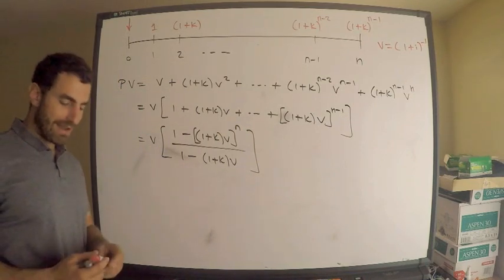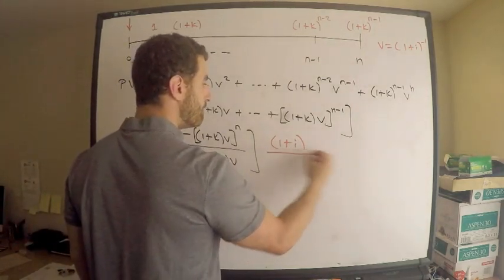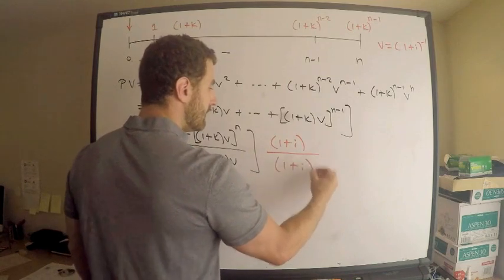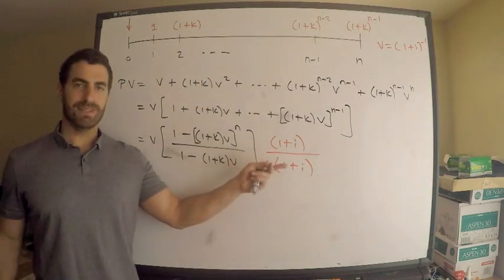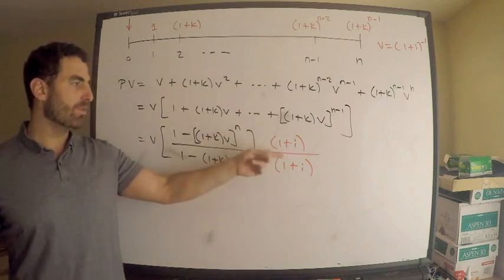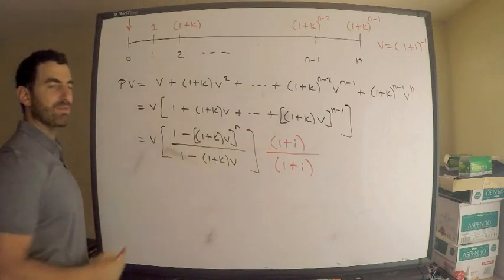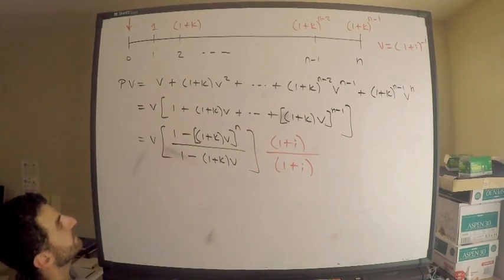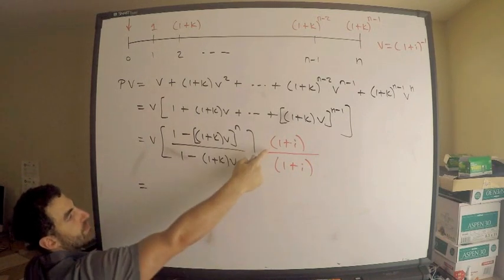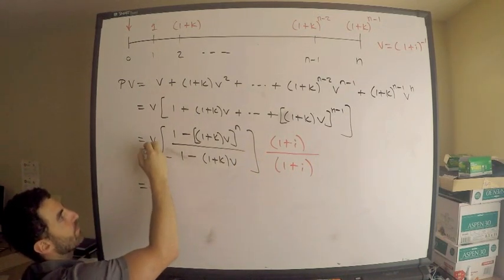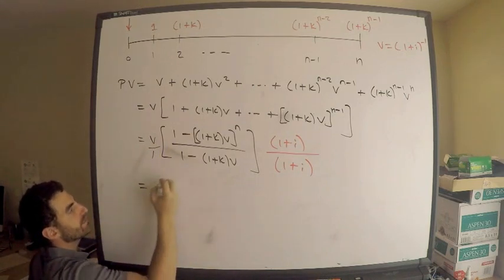Now I want to write this in a nicer way. I'll multiply top and bottom by (1 + i) — that's completely legal, you're multiplying by one written conveniently, which leaves the expression unchanged. When I do this, (1+i)·v = 1, so that factor cancels in the numerator. That takes care of it — (1+i) cancels the v that's in the numerator.